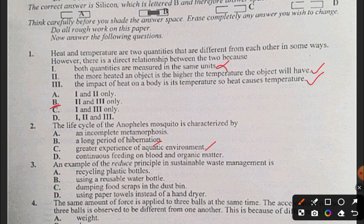Question 3: An example of the reduce principle in sustainable waste management is: A) recycling plastic bottles, B) reusing usable water bottle, C) dumping food scraps in the dustbin, and D) using paper towels instead of a hand dryer. The answer to question three is B.